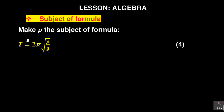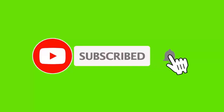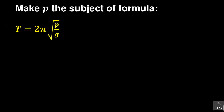It's under algebra, and it says make p the subject of the formula. So we are supposed to make p the subject of the formula, meaning at the end of the day you must have p equal to whatever — in terms of t, pi, and g. There are a few concepts here to go through so you can effectively make p the subject of the formula. Remember, we are looking at p — there is our p right there.